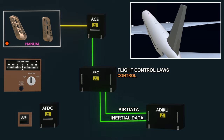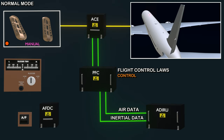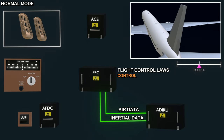Inertial data such as aircraft position, attitude, acceleration, and angular velocity. When all data is available, the flight computer functions in normal mode. The final calculation is sent to the ACE. The ACE converts the digital signal to analog and operates the power control unit of the control surface. Positioned transducers give the rudder position signal. Releasing the pedal will return the rudder back to neutral. When the trim switch is used, a signal is sent to the flight computer through the ACE.